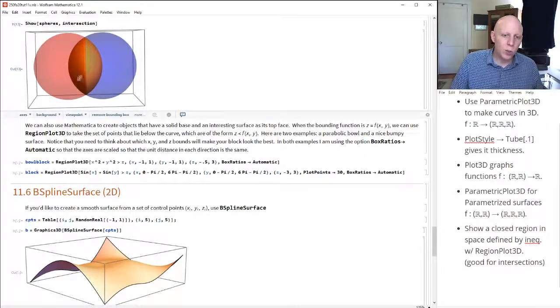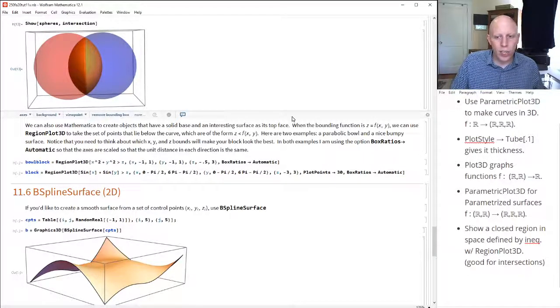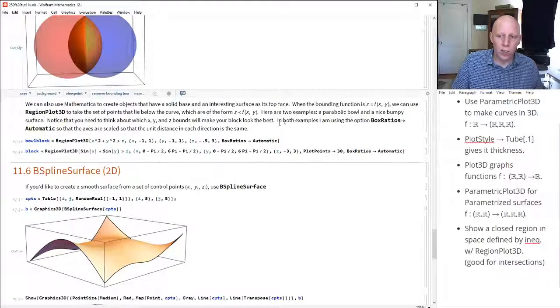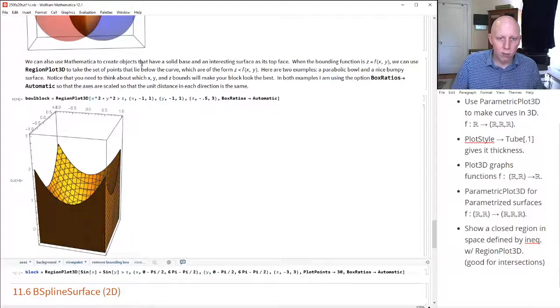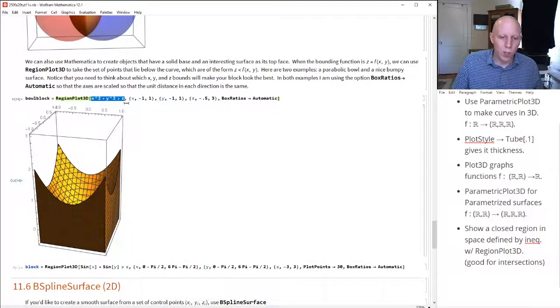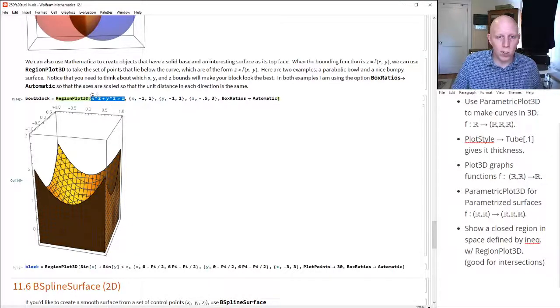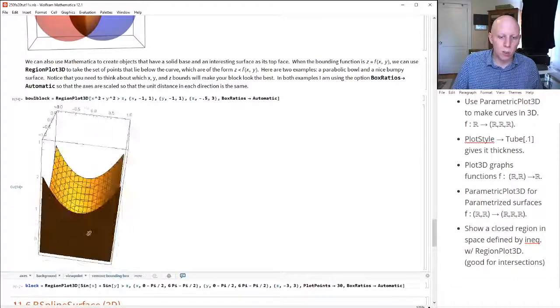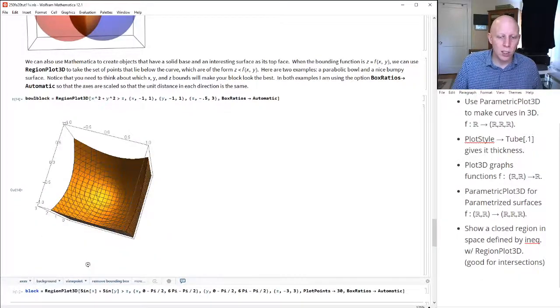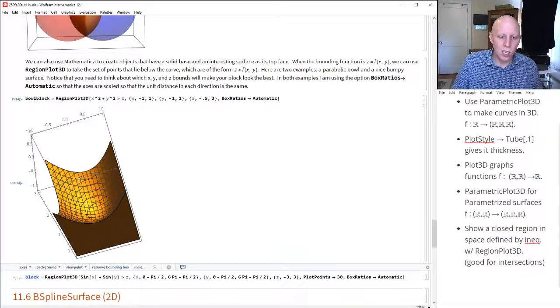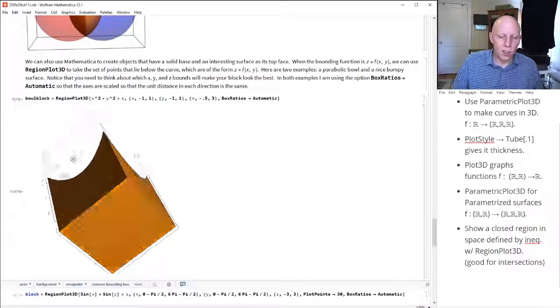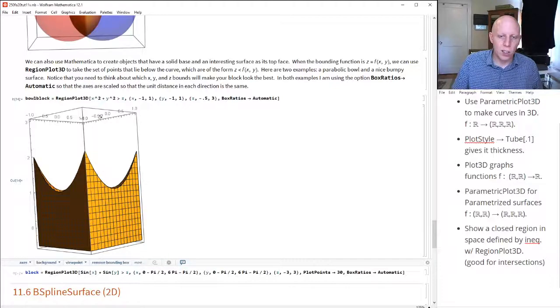You can also use this region plot 3D to create objects that have interesting surfaces. So consider this object here. Here we have, we're taking the paraboloid z equals x² + y² and we're taking everything that's below it. And so what we've created here is basically a function block. It has the shape of this function on the top and we're taking all the points that are underneath it.